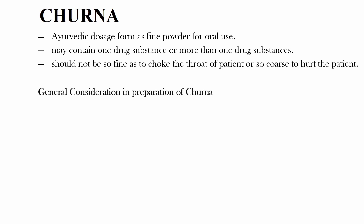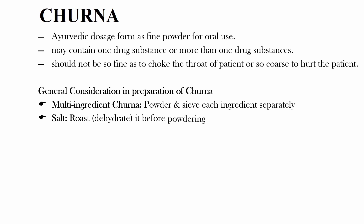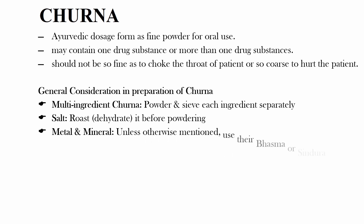Now coming to the general considerations in the preparation of Churn. If the formulation of a Churn has more than one ingredient, then powder and sieve each ingredient separately and then mix. If the formulation of a Churn has salt, then roast the salt before powdering. If the formulation of a Churn has metal and mineral, unless otherwise mentioned, use their Bhasma or Sindur.